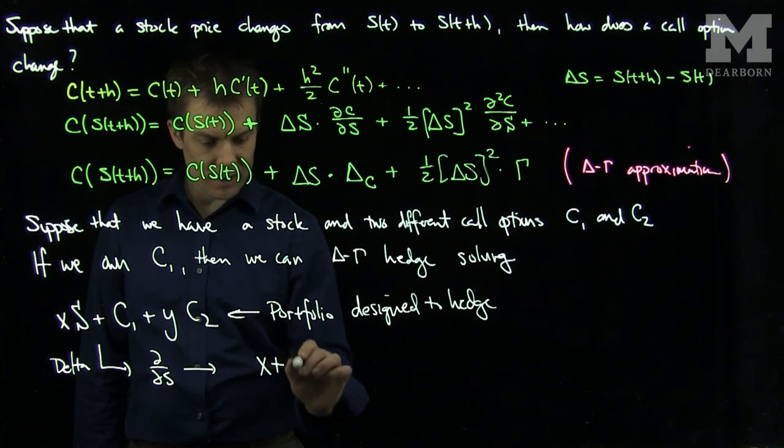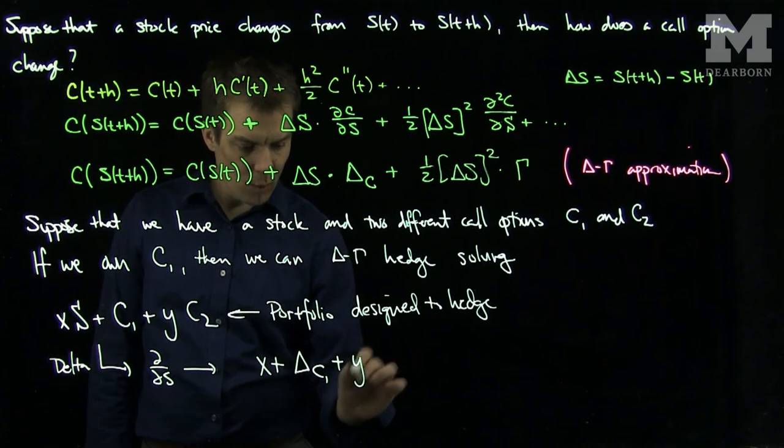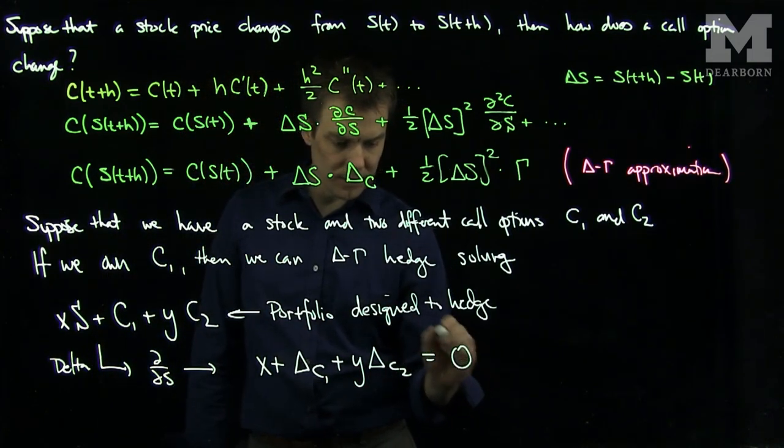plus the delta of C₁, plus y times the delta of C₂. And we'll set this equal to 0.